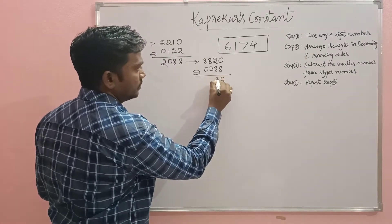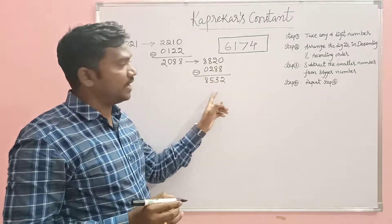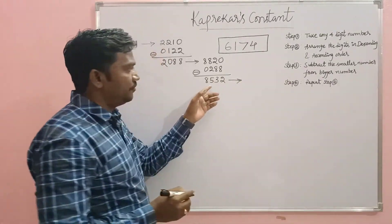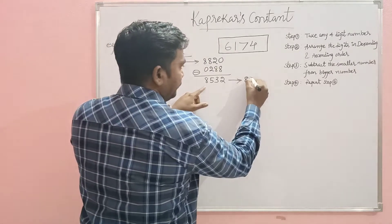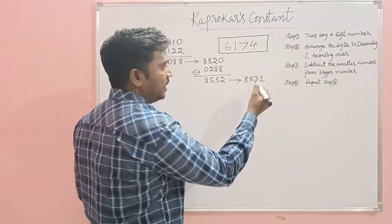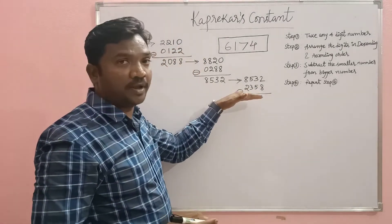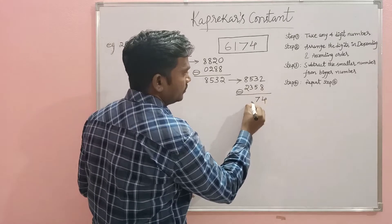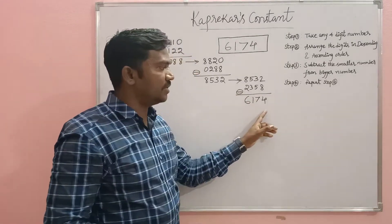Continuing the process — arrange the digits in ascending order and then subtract the smaller number from the bigger number. We get 8532. Now arrange the digits of 8532 in ascending order, then subtract the smaller number from the bigger number.